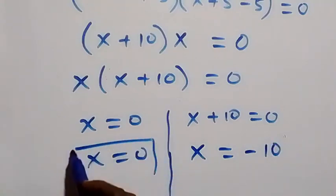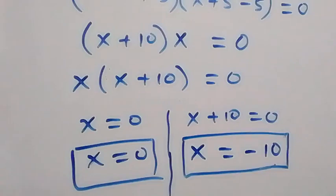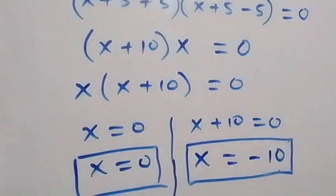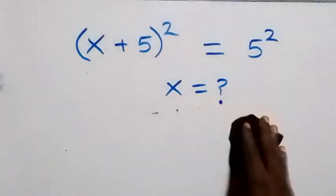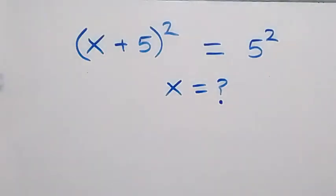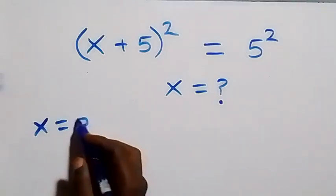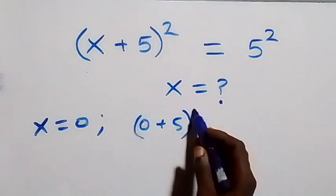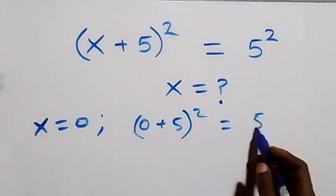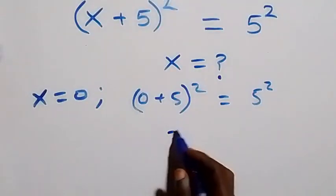This is the same result as in the first method. We can check to verify that both answers satisfy the problem. Substituting x equals zero, the equation becomes (0 + 5)² equals 5², which gives 5² equals 5².